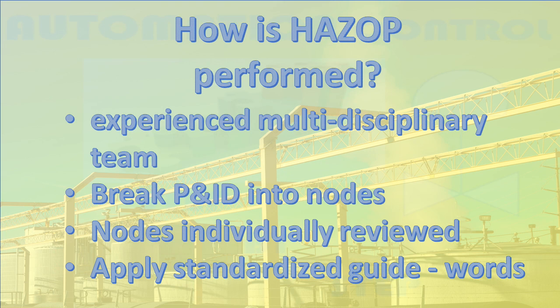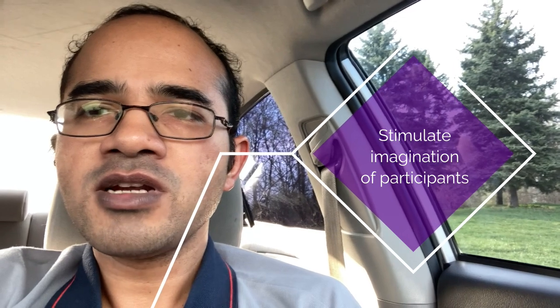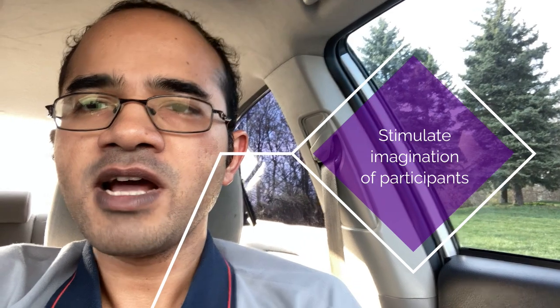How is HAZOP performed? HAZOP is performed by a suitably experienced multidisciplinary team during a series of meetings. The technique is based on breaking the overall complex design of the process into a number of simpler sections called nodes, which are then individually reviewed. It is a qualitative technique and aims to stimulate the imagination of participants to identify potential hazards and operability problems. Structure and direction are given to the review process by applying standardized guide word prompts to the review of each node.